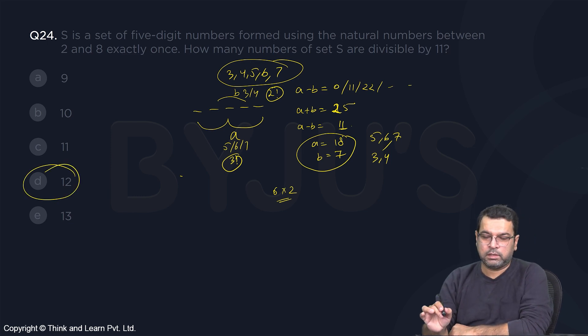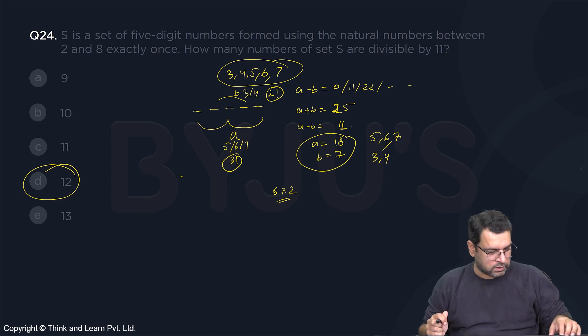12 will be your answer. A bit of permutations and combinations, a bit of divisibility rule, and we get our answer.